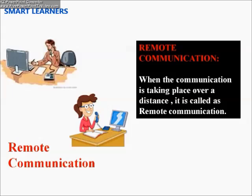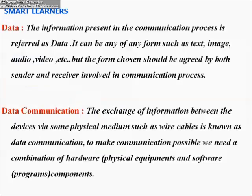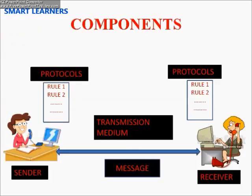The information present in the communication process is referred to as data. It can be of any form such as text, image, audio, video, etc., but the form chosen should be agreed upon by both sender and receiver. Data communication is defined as the exchange of information between devices via some form of physical medium such as wire or cables. To make communication possible, we need both hardware and software components.